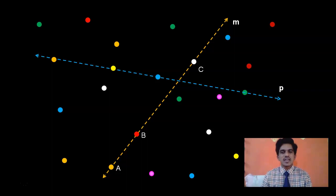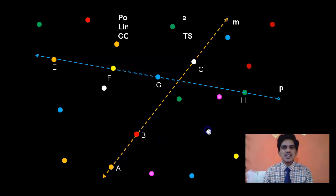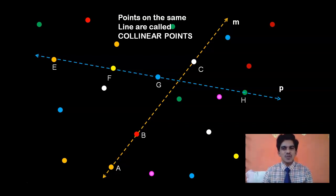I have drawn one more straight line, called P. The points on line P are E, F, G, and H. These points are actually lying on the same straight line. A, B, C are on straight line M, and E, F, G, H are on straight line P. These points lying on the same straight line are called collinear points.